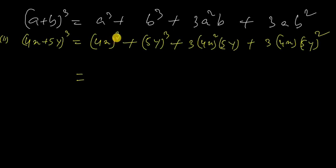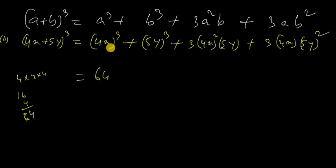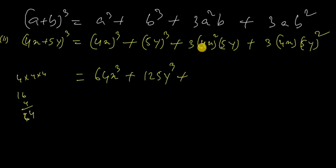4 cubed means 4 into 4 into 4, which equals 64. So 4x whole cube gives 64x cubed. And 5y whole cube gives 125y cubed.